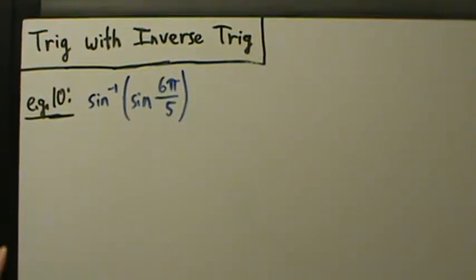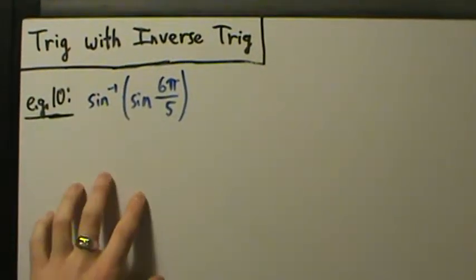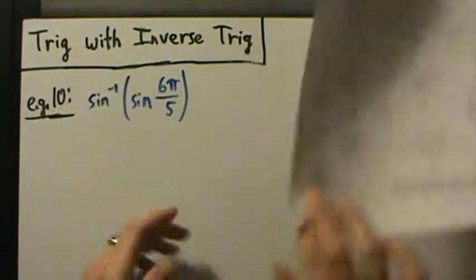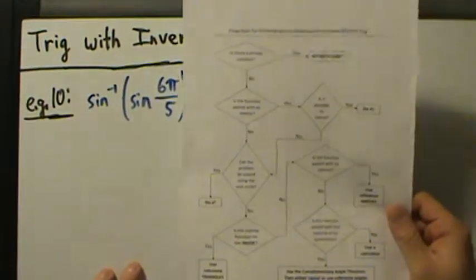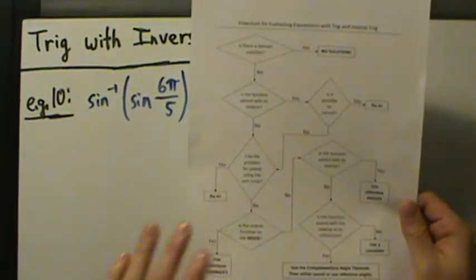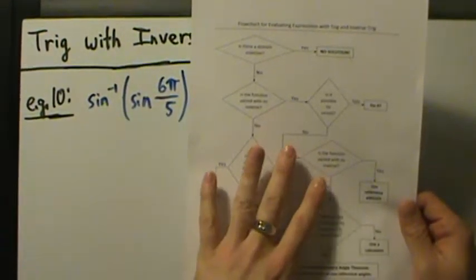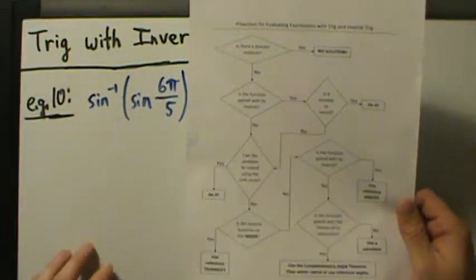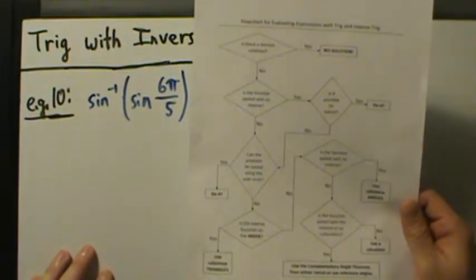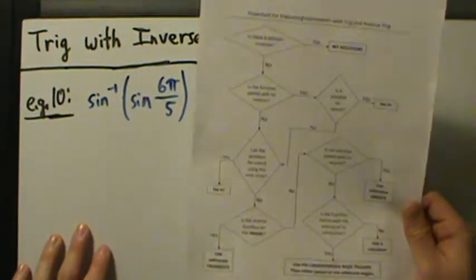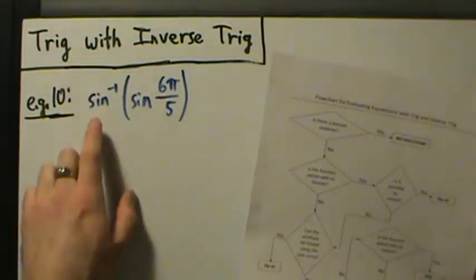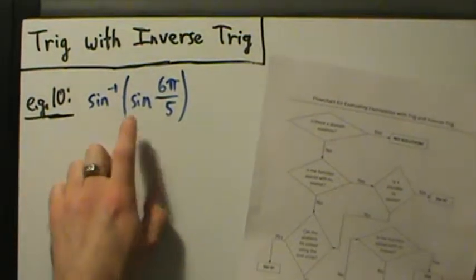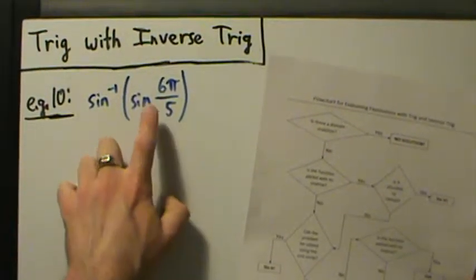Here's example 10 of evaluating trig with inverse trig. We're going to be using this flowchart that we've been using for the previous examples. If you want to copy this flowchart to follow along, check the video description — there's a link in there. You can click that link, open this up, print it out, and follow along if you'd like. So example 10 is the inverse sine of sine of 6π over 5.